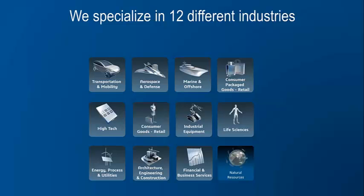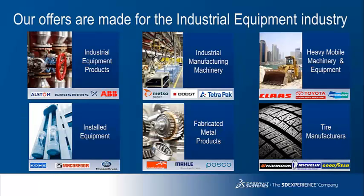Industrial equipment is the combination of six different segments, illustrated in this chart. It spans from the individual part and component, where we have a large number of customers, to very complex products like complex excavators or big paper machines with hundreds or thousands of parts. These very complex products are highly customised in response to specific customer demands, but also to local regulations and local equipment providers. An additional layer of complexity arises from the fact that these products include more and more sophisticated electronics, sensors and embedded control software.